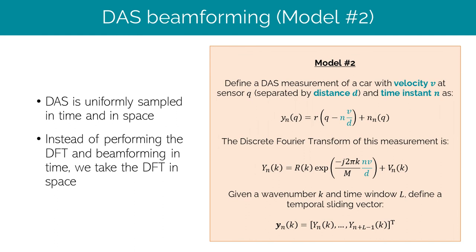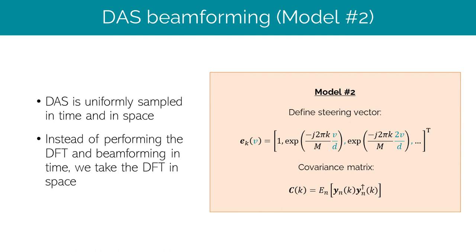For model 2, we have a very similar signal model, except that the signal of the car is not translated in time but translated in space. Since the DAS measurement has two dimensions — one in time, one in space — we can compute the Fourier transform along the spatial dimension instead of the temporal one. Given a specific wavenumber k and some time window l, we define a signal vector as l time-consecutive Fourier transforms at times n, n+1, up to n+l. The covariance matrix is estimated as the expectation value over time at a given wavenumber. In this way, both the steering vectors and the covariance matrix are a function of wavenumber, so we can perform MUSIC beamforming without the restrictive narrow-band approximation.